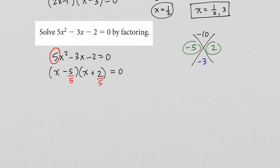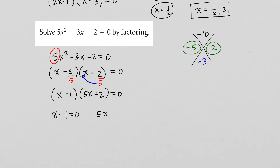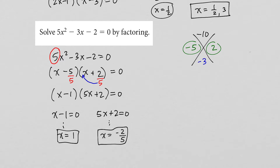The important step is that if you have a leading coefficient, you need to divide each of these numbers by that coefficient. So 5 divided by 5 is 1, but 2 divided by 5 is not a whole number, so we bring the 5 in front of the x, giving us 5x plus 2. We then set each factor equal to 0 and solve. In the first equation, x equals 1. In the second equation, subtracting 2 and dividing by 5, we get negative 2 fifths.